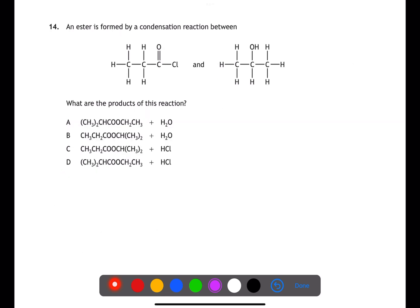Question 14 is looking at ester formation when using an acid chloride and an alcohol. In this process we will lose HCl rather than water. Because we have a secondary alcohol this will join on and will end up with a branch on the alcohol side of the ester. Because we produce HCl and not water we can eliminate answers A and B. You can see that we have CH3 branches on the alcohol side which is C.